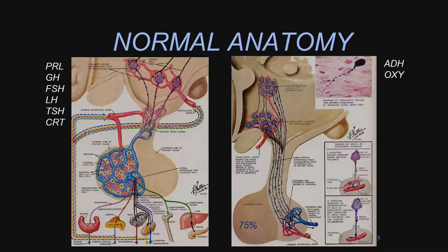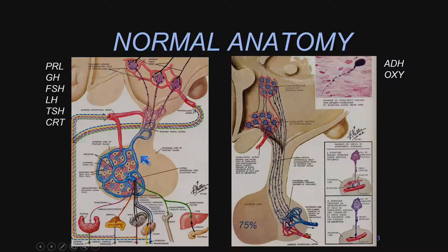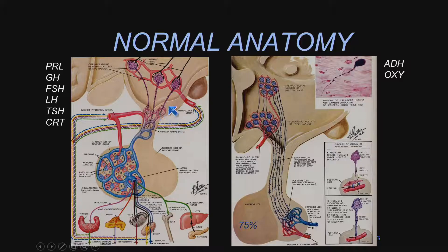The pituitary gland is a very small structure, but it's very important because of the endocrine function that it supports. It's really two separate glands because they are structurally and functionally very different. The anterior pituitary gland, or adenohypophysis, is where we have release of six hormones: prolactin, growth hormone, follicle-stimulating hormone, luteinizing hormone, thyroid-stimulating hormone, and corticotropin. These are all delivered to the pituitary gland via the hypophyseal portal system.